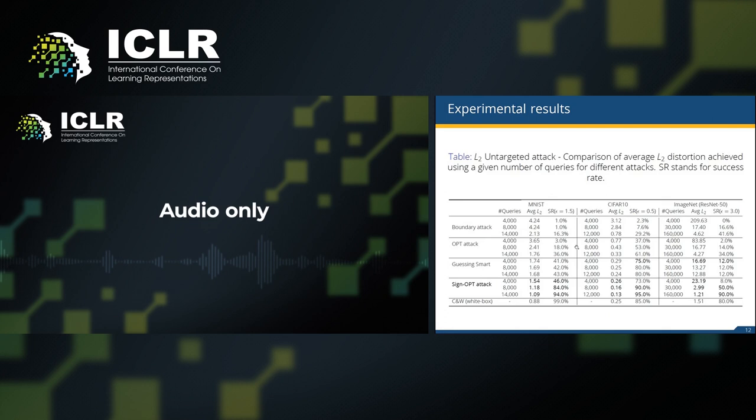To be specific for ImageNet dataset, Sign OPT achieves a median distortion of 2.9 in about 30,000 queries while the other attacks require much more than 160,000 queries to achieve the distortion of 4.0.